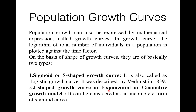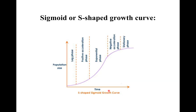On the basis of shape, growth curves are basically of two types. The first is the sigmoid or S-shaped growth curve, also known as the logistic growth curve. It was described by Verhulst in 1839, and therefore it is also known as the Verhulst-Pearl logistic growth curve. This type of population growth curve is found in yeast cells and is formed of five phases.